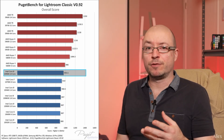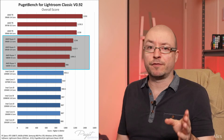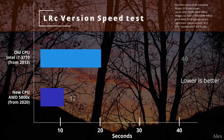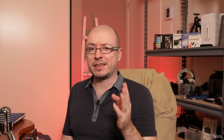I'd definitely recommend going AMD in the 5000 series if you want to upgrade your machine. In my own test, the old machine with four cores took 40 seconds, while the new machine with eight cores took only 12 seconds — that's 70% faster. Even though it's only doubling the core count, seven years of difference gives you 70% more speed; those new AMD processors are just very good.